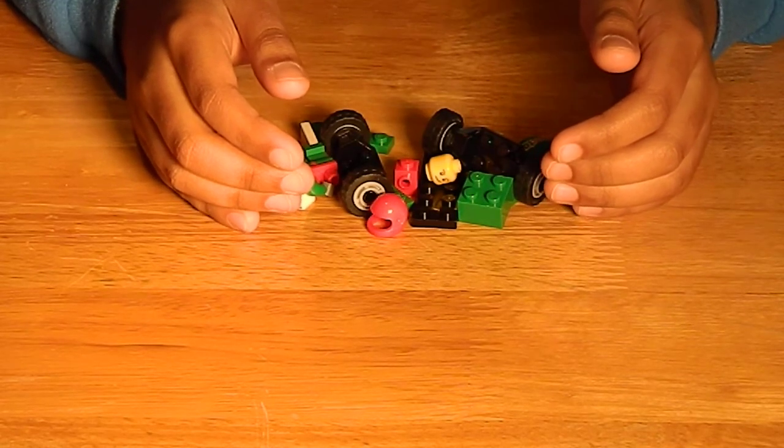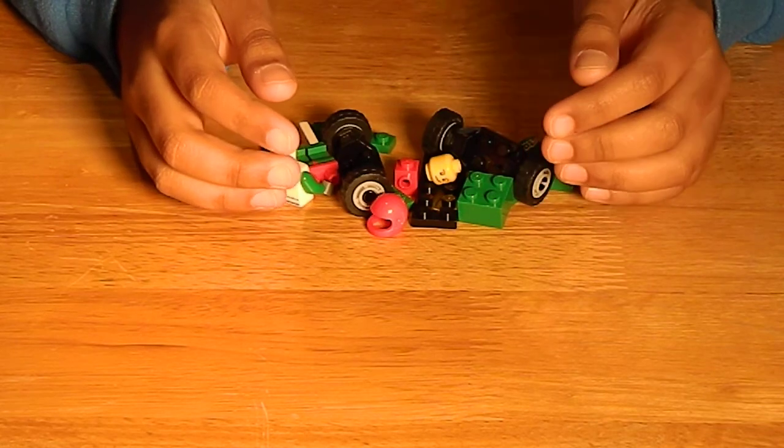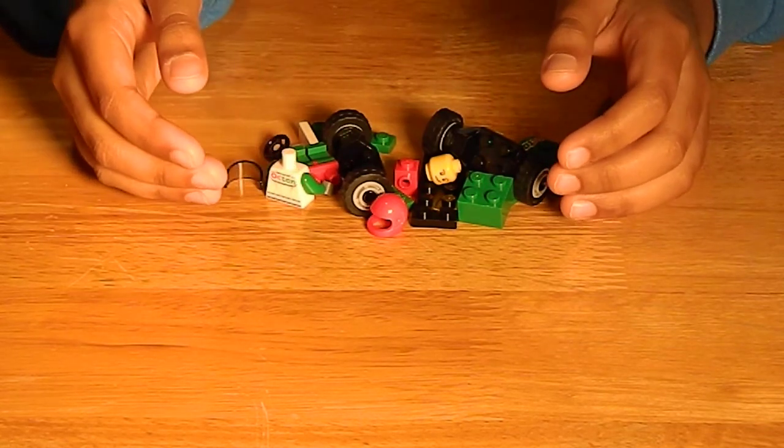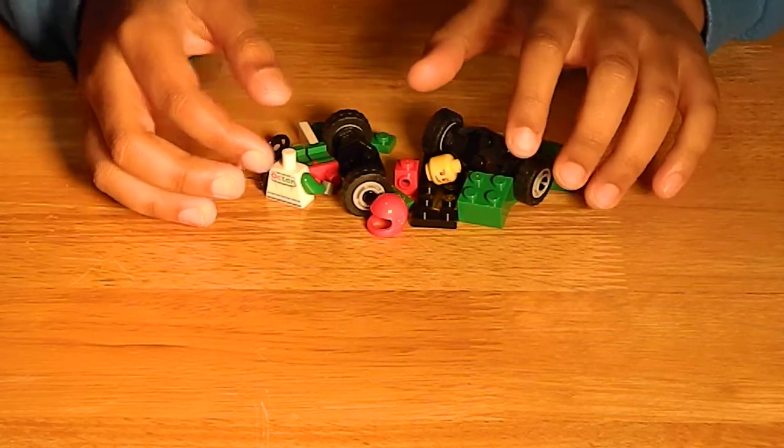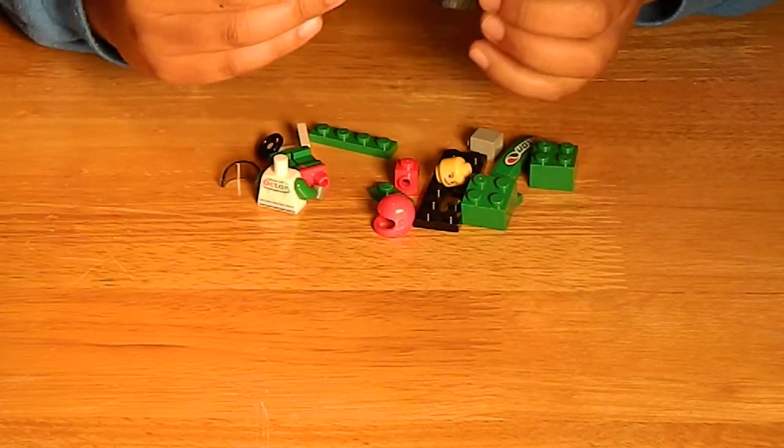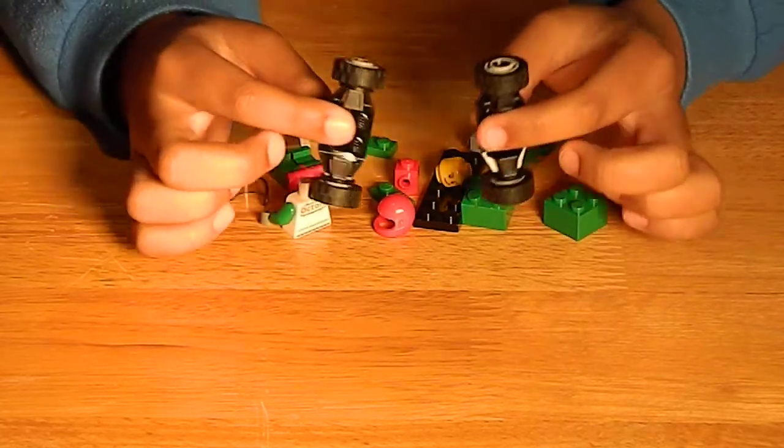Hi, welcome back to Building with Isaiah! Today I'm going to show you how to make a LEGO go-kart. This set includes 17 pieces, including the minifigure. So first, you want to grab two LEGO tires.